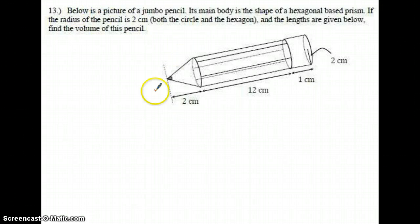The jumbo pencil's main body is the shape of a hexagonal-based prism. If the radius of the pencil is 2, both the circle and the hexagon, so from the center to the corner of the hexagon, that's also supposed to be 2, and the lengths are given. Find the volume of this pencil.